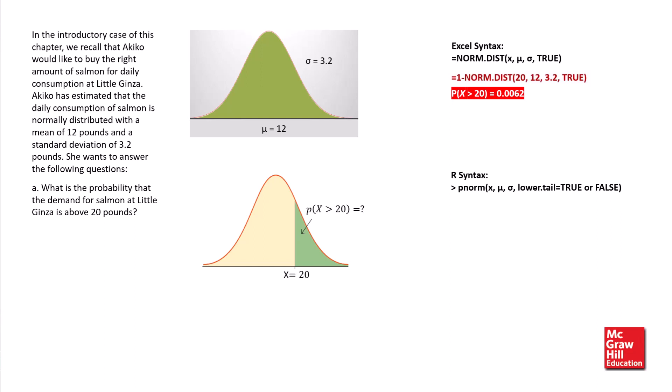we use this pnorm function with the respective x, mu, sigma, and the last argument set to false. The probability is 0.0062.